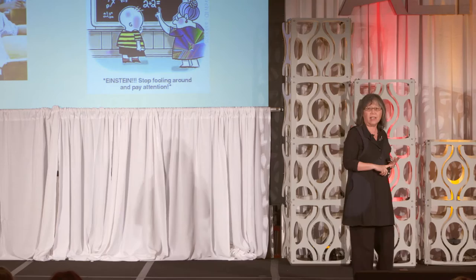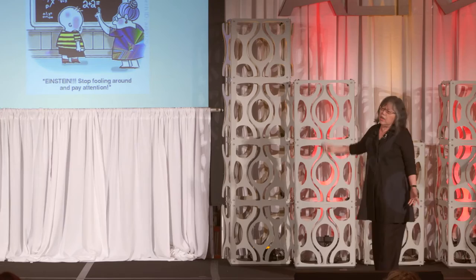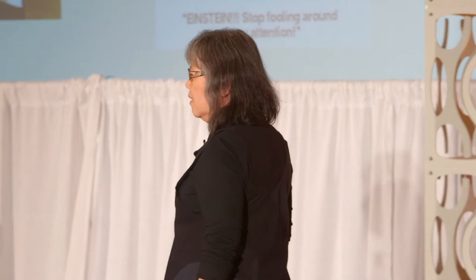Someone who's off task is easy to tell — you can see that they're goofing around, not looking at you, doing something else, zoning out. We can also tell who is an on-task learner: somebody who's paying attention to you. As this cartoon illustrates, the teacher says, 'Einstein, stop fooling around, pay attention.' That's our typical concept.